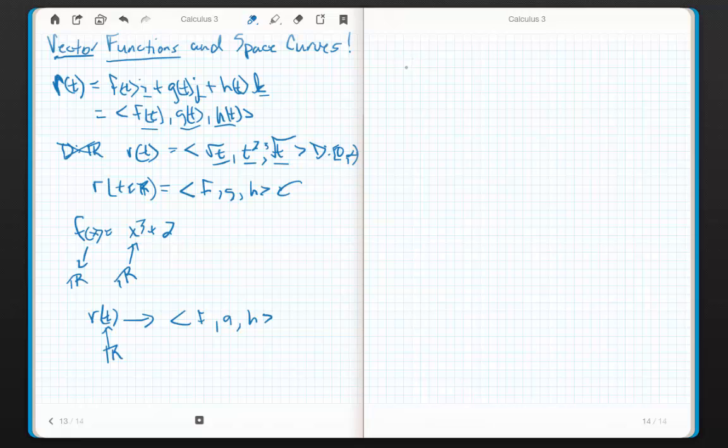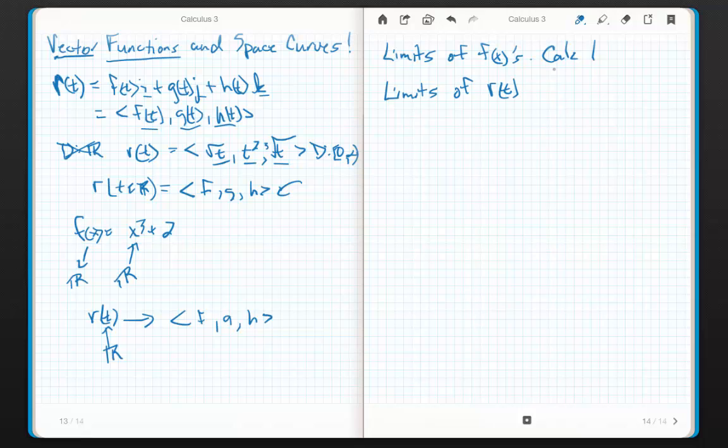Basically, what we're doing is we're just extending our knowledge. Now, I don't mean to be glib or overly simplify it, but it's not very difficult to process how these things work. So, remember the first thing that we did way back in Calc 1. We talked about limits, right? Limits of functions of f of x's. Well, now we're going to talk about, this was Calc 1, now we're going to talk about limits of r of t's.